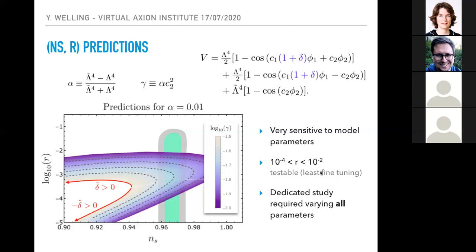But I should of course point out that in order to make this prediction more robust, one has to follow this up with a more dedicated study by varying all possible model parameters, including for instance, the variation of these amplitudes with respect to each other and shifting the value of the C2s, so allowing them to take different values.